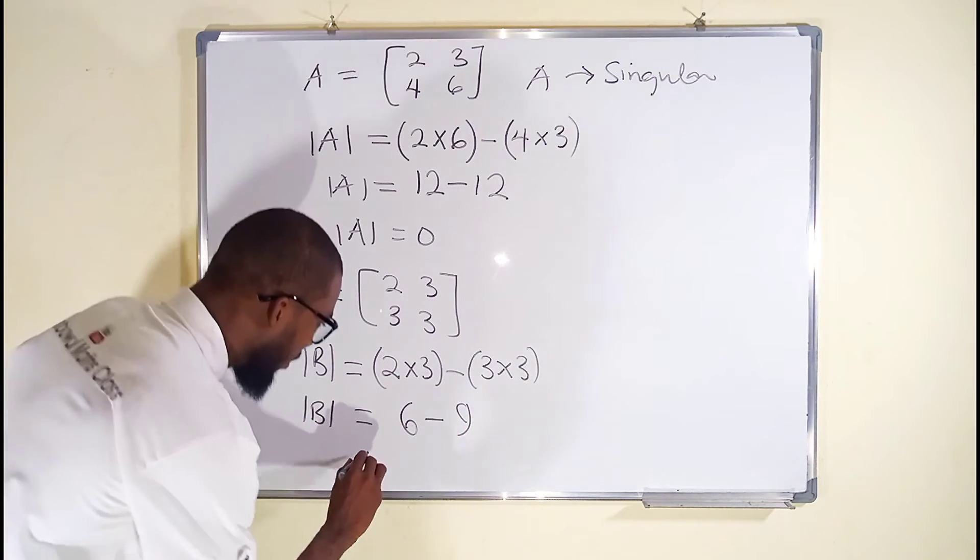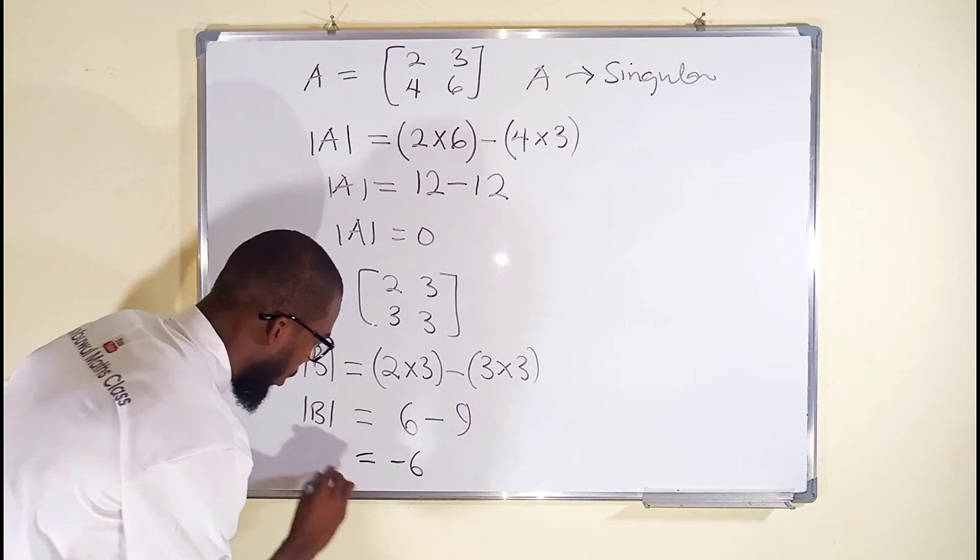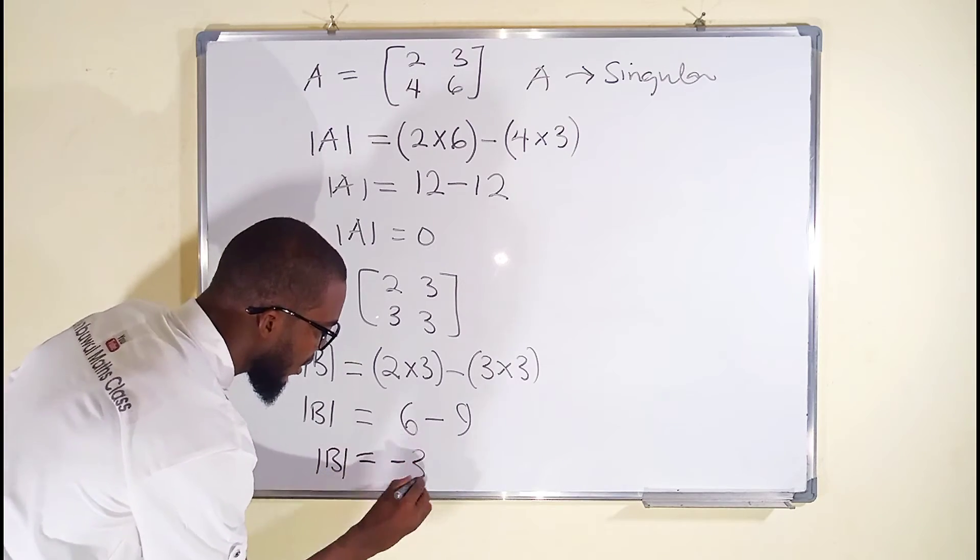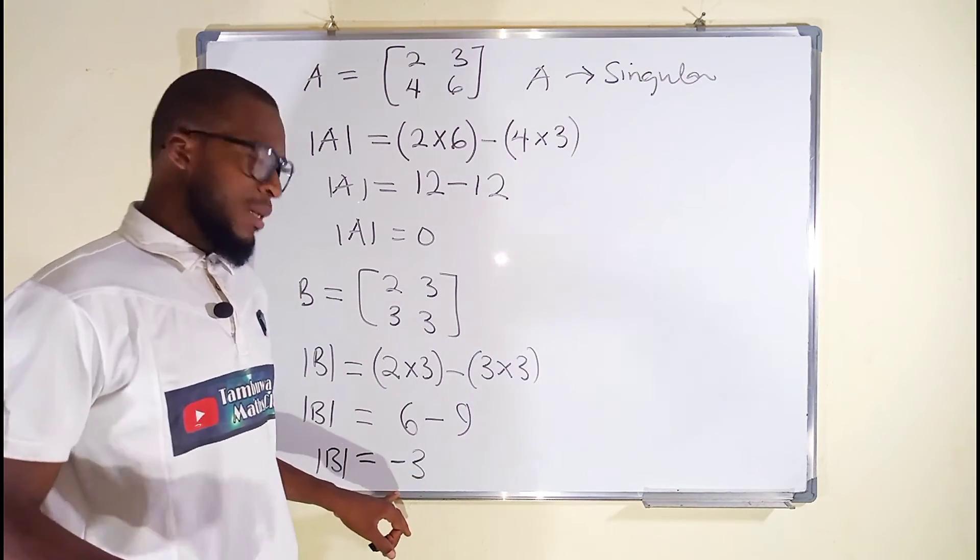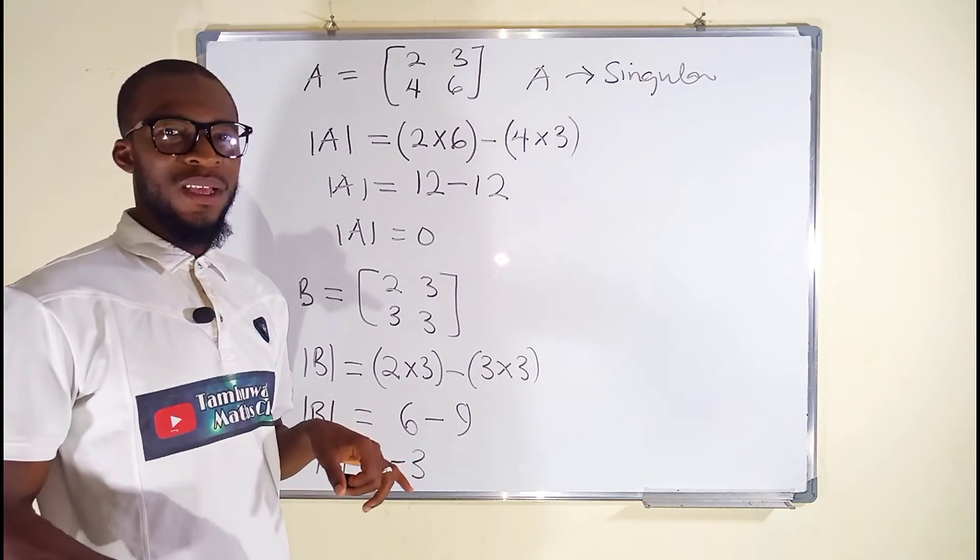You can see that this is non-zero, and therefore this matrix B is non-singular.